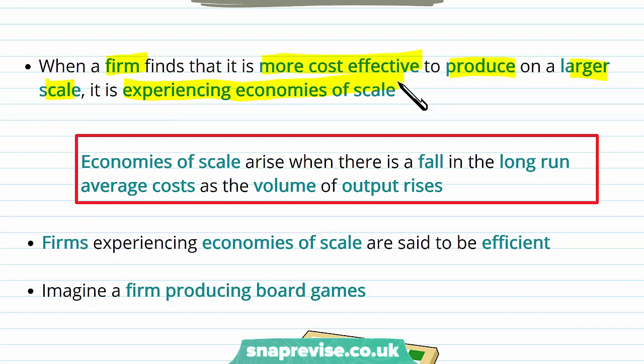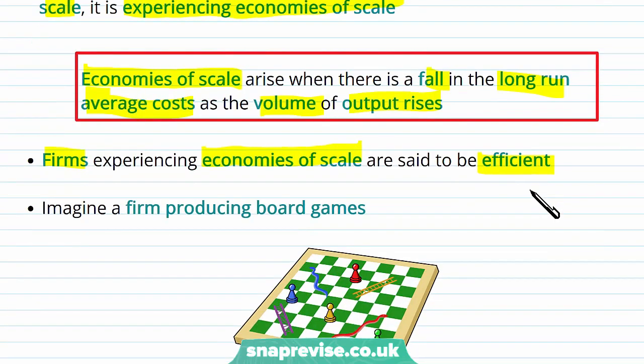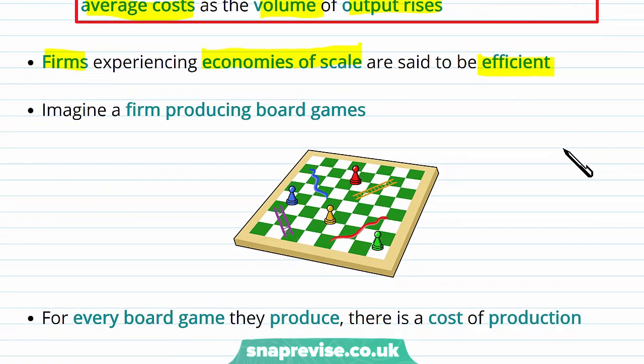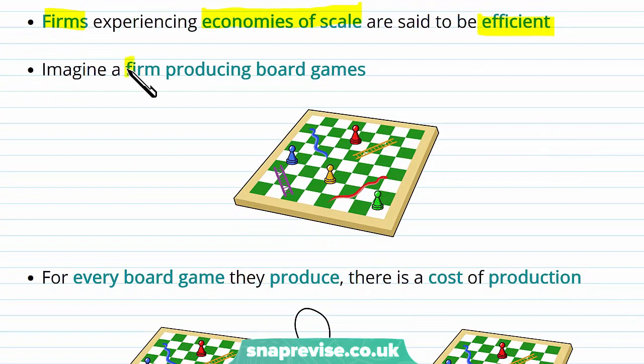Essentially a firm benefits by growing larger. Economies of scale arise when there is a fall in the long run average costs as the volume of output rises. Firms experiencing these economies of scale are said to be efficient. We'll walk through an example of a firm producing board games to see how we can benefit from economies of scale.